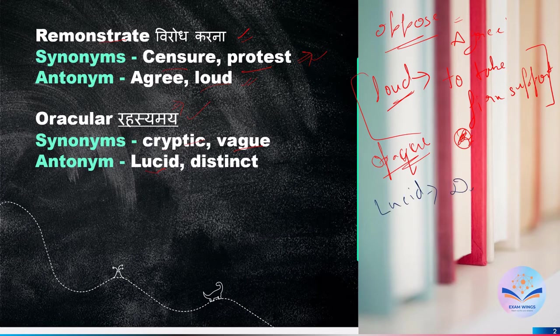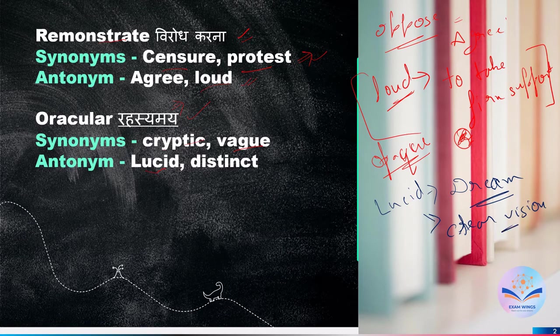Antonyms of oracular are 'lucid' L-U-C-I-D and 'distinct'. Lucid is basically used as in 'lucid dream', which means clear vision, very specific. Distinct means specific — you are specified about what you have to do or what you don't have to do.